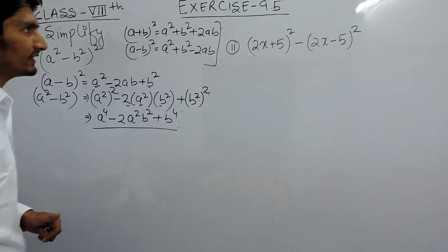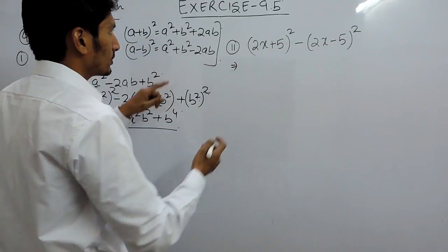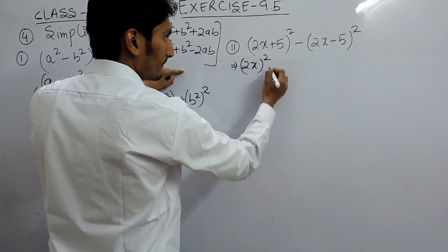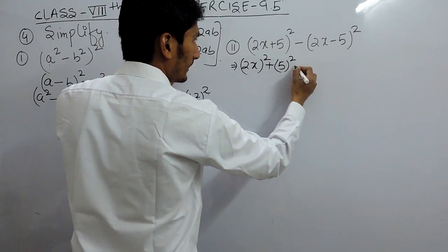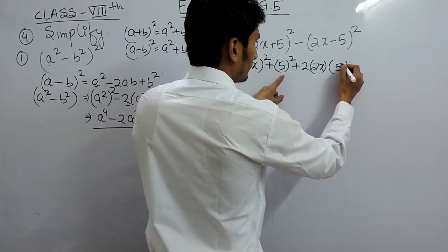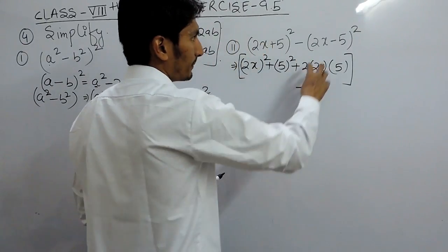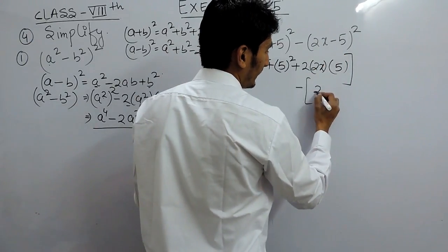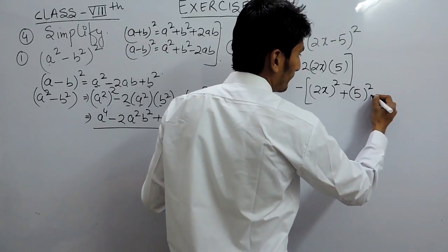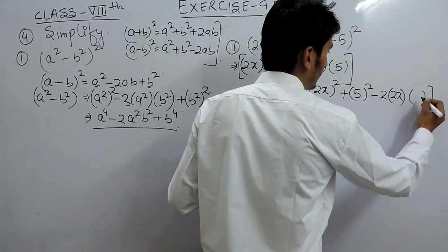So I have to use both identities to solve this. First, this is (a + b) so I use the identity in plus form: (a + b)² = a². Our 'a' is 2x, so this will be (2x)² plus b², our 'b' is 5, so this is 5², plus 2 into a into b, where a is 2x and b is 5. Now for (a - b)² this will be (2x)² plus 5² minus 2 into 2x into 5.